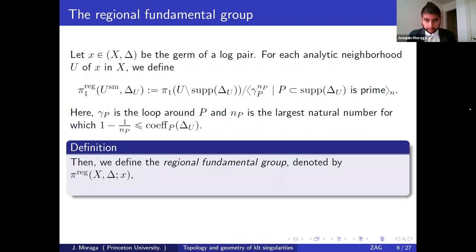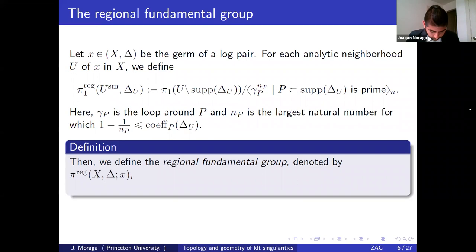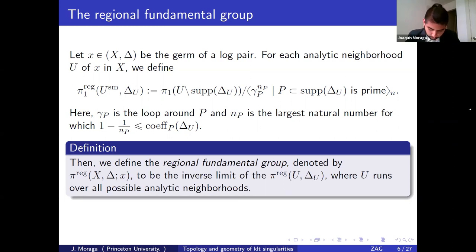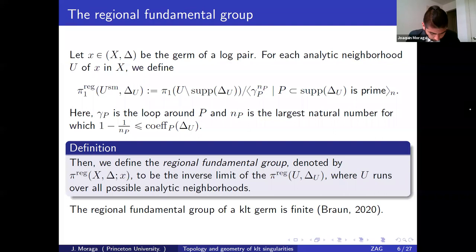The regional fundamental group of the singularity is defined as the inverse limit of all these groups as U runs over all possible analytic neighborhoods. One can see it stabilizes because the singularity has a CW complex structure, so these will stabilize and you will have a finite presentation. A recent breakthrough by Lucas Brown is that the regional fundamental group of a KLT germ is finite.